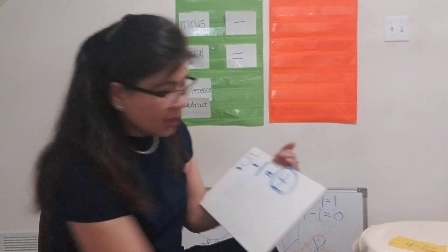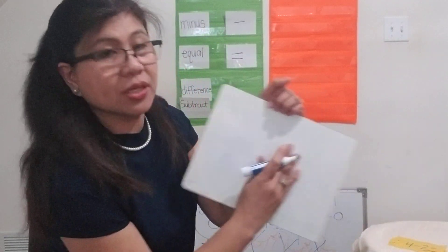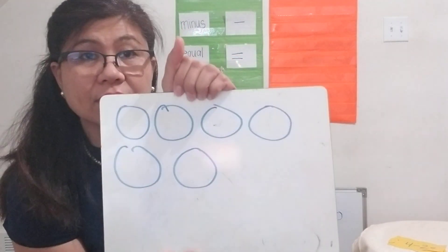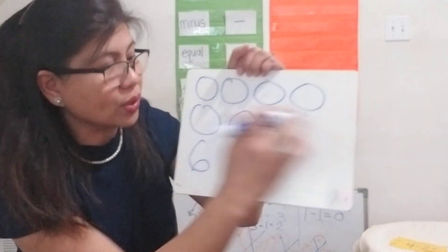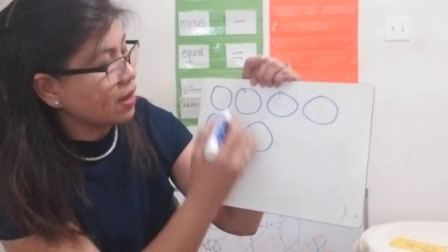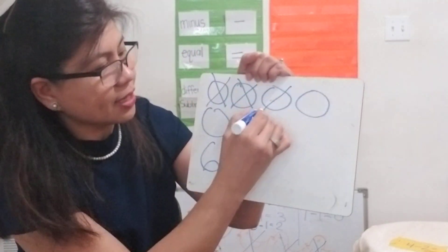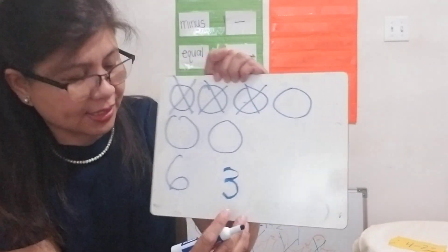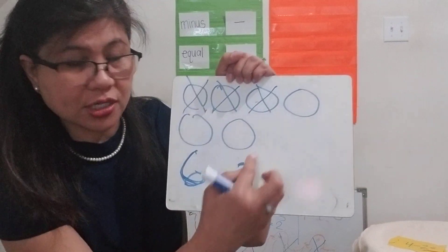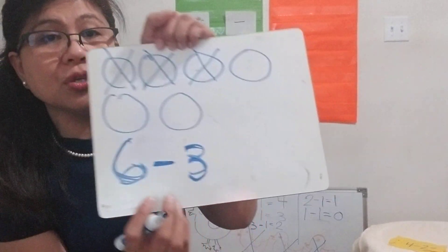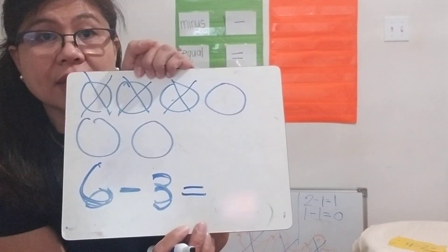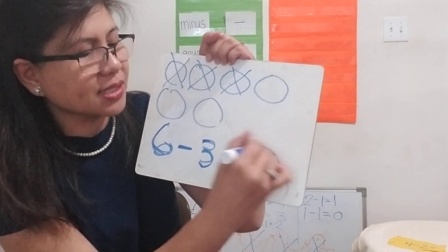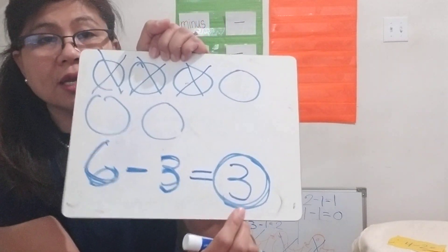Let's practice. I'll draw circles — count the circles with me: one, two, three, four, five, six. How many circles do I have? Six. So that's what we write first — the bigger number, the total. How many all together? Now I cross this out, this out, and this out. How many circles did I cross out? Three. So three is your second number in your subtraction sentence. This is how many you have in all at first, then how many were taken away — you use the minus sign. Now put the equal sign before you write the difference. How many are left? One, two, three — you have three left. The three after the equal sign is the difference.